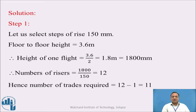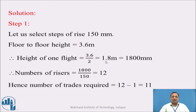The first step is to assume a rise. The minimum rise required for a public building is 150 mm. The floor-to-floor height is 3.6 meter. A dog-legged stair always has 2 flights, so 3.6 meter divided by 2 gives a flight height of 1.8 meter, that is 1800 mm. The number of risers in one flight is 1800 divided by 150 mm, which is 12. Hence the number of treads required is 12 minus 1, that is 11.